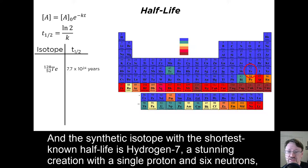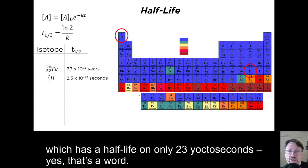And the synthetic isotope with the shortest known half-life is Hydrogen-7, a stunning creation with a single proton and six neutrons, which has a half-life of only 23 yoctoseconds. Yes, that's a word.